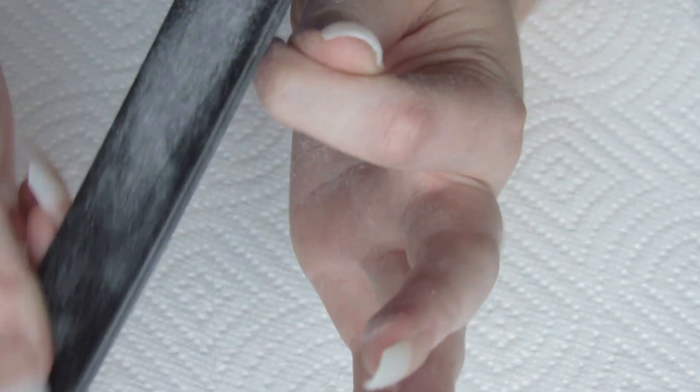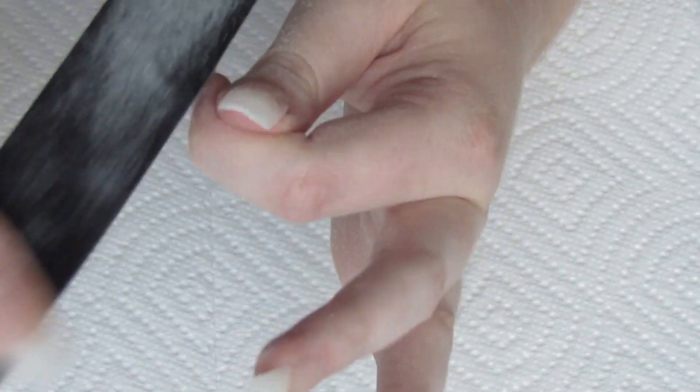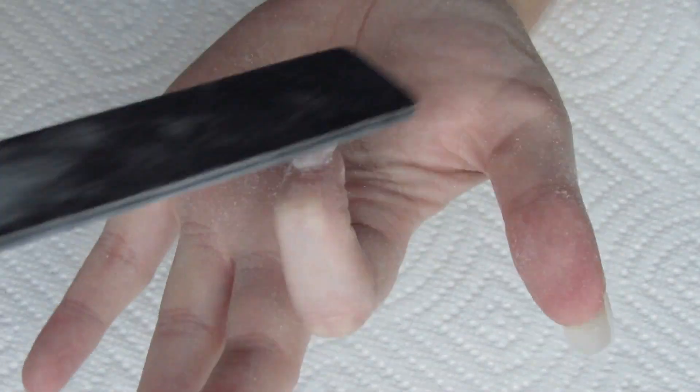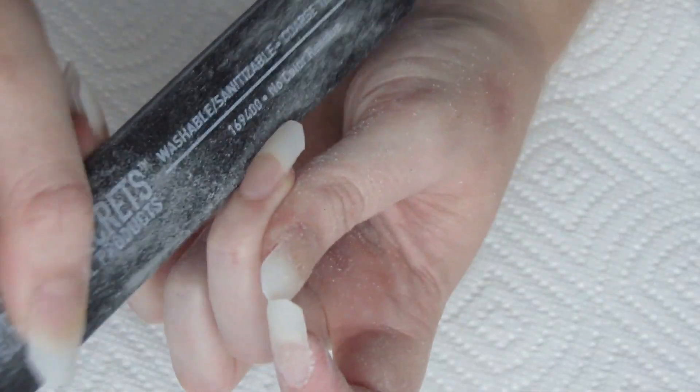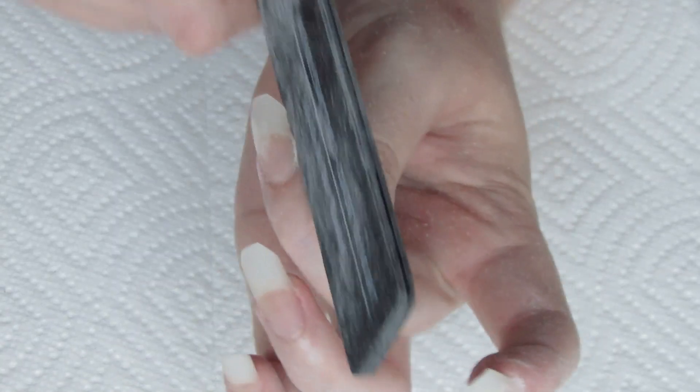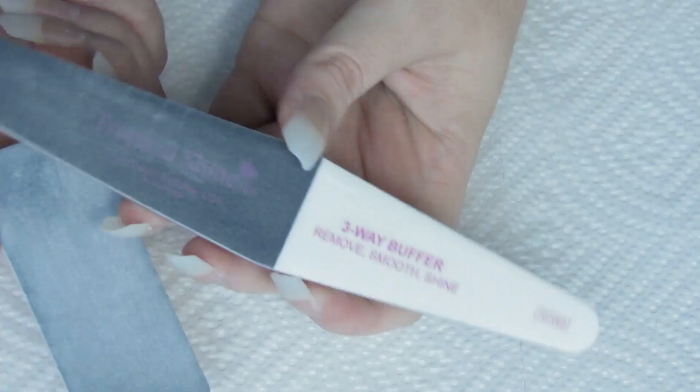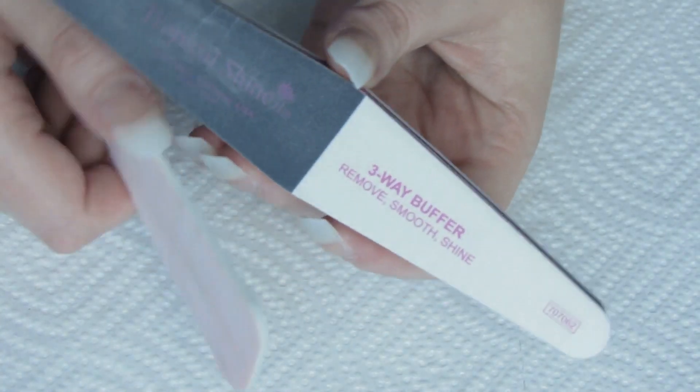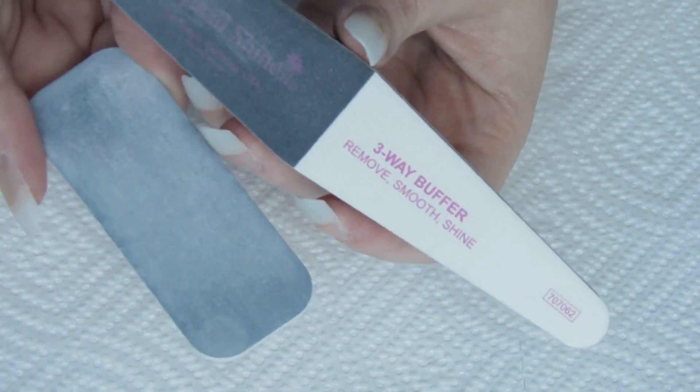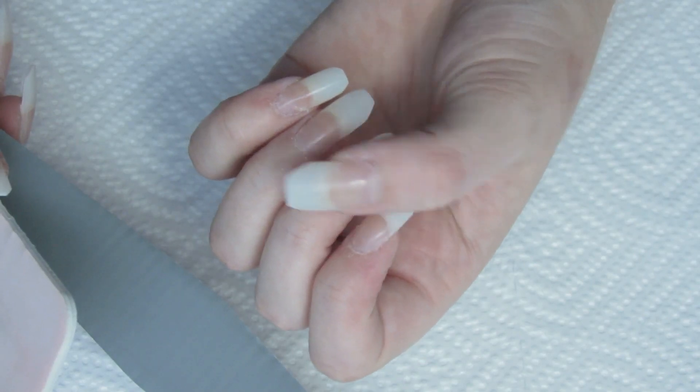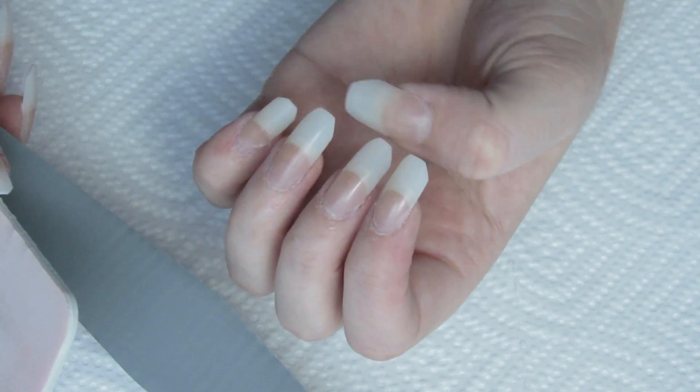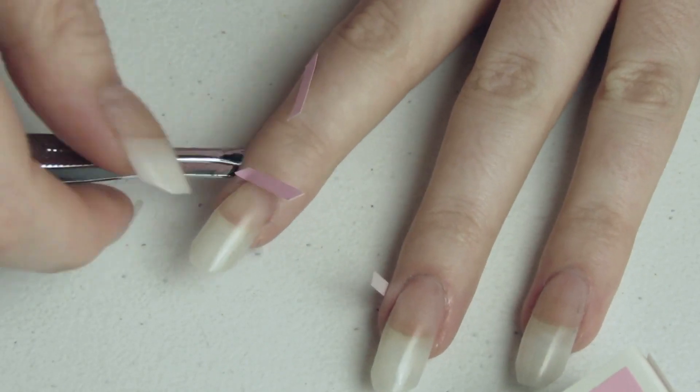Once you have the shape all filed out, you can buff the entire surface of the nail just to make sure there aren't any bumps or weirdness after doing the acrylic. And then the final filing step is to use a super soft nail file and a three way buffer until you get nice shiny perfect nails prepped for painting.